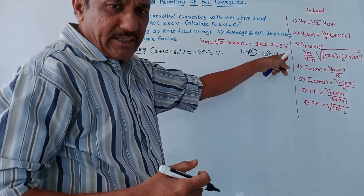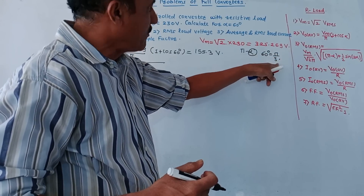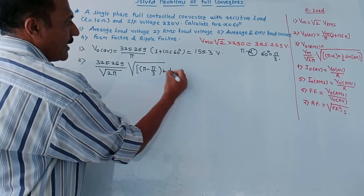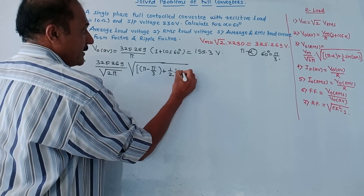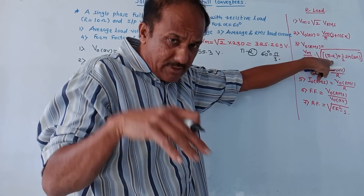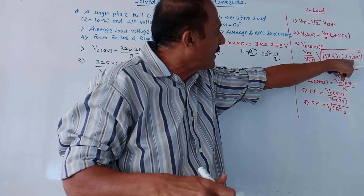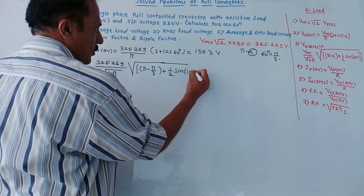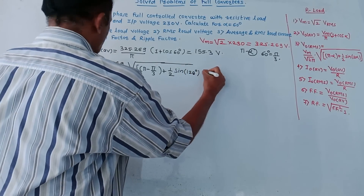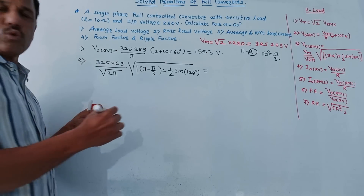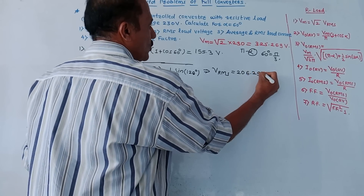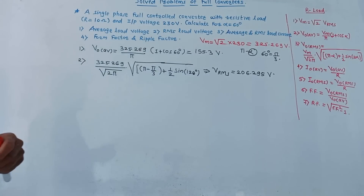Pi means 180 degrees, so 60 degrees is 180/3, which is π/3. So it is π − π/3 + ½ sin(2α), where 2α = 120 degrees. Solving this gives Vrms = 206.295 volt.